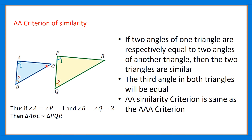If angle A equals angle P and angle B equals angle Q, then we can say that triangle PQR and triangle ABC are similar by the AA criterion of similarity.